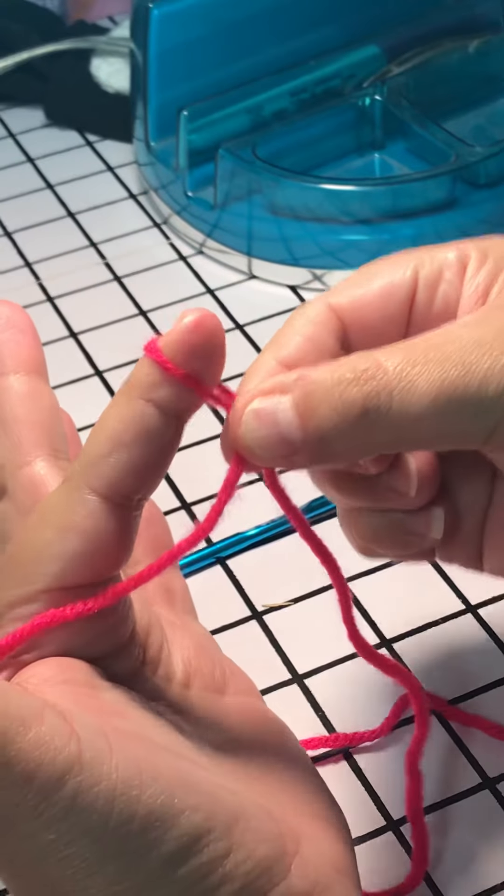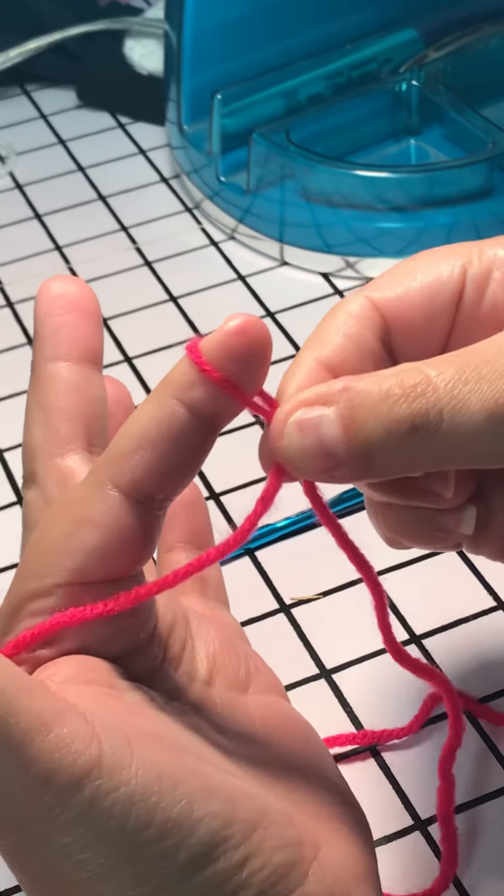Pinch the crossing point of the two pieces with the thumb and index finger of the right hand, or your predominant hand, and pull it off the index finger of the other hand.